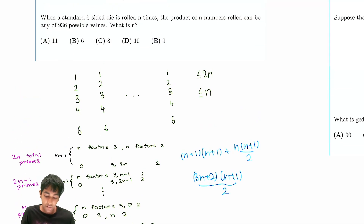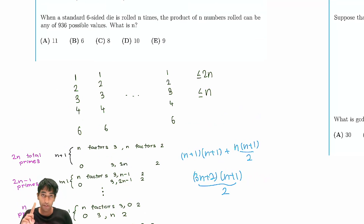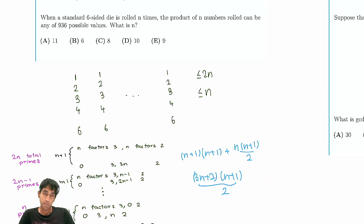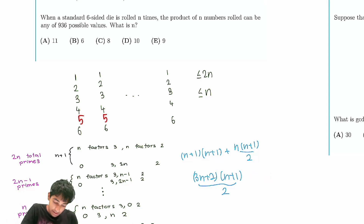So if the problem had no 5s, we'd set (3n+2)(n+1)/2 equal to 936 and solve for n. But we have to deal with 5s. Let's count how many 5s we could have.